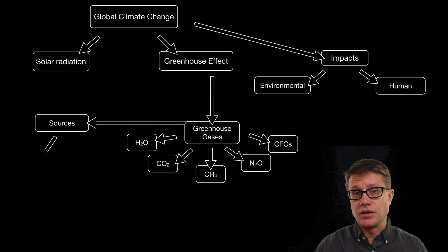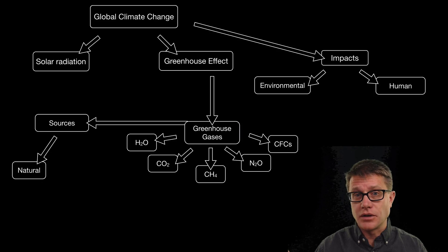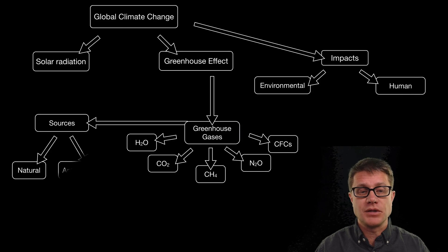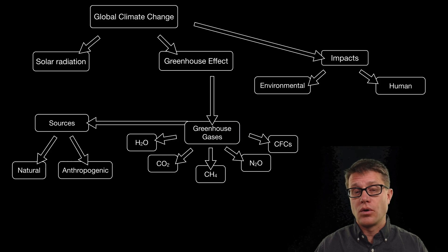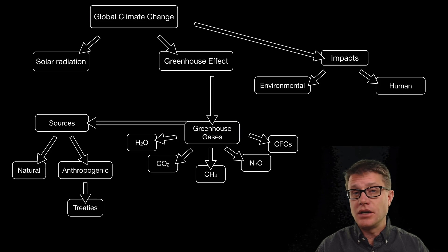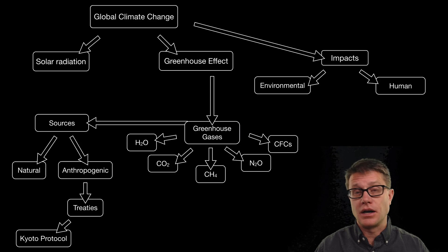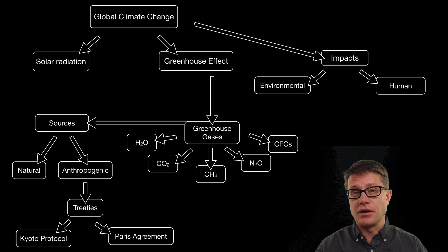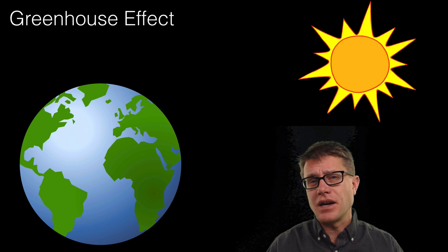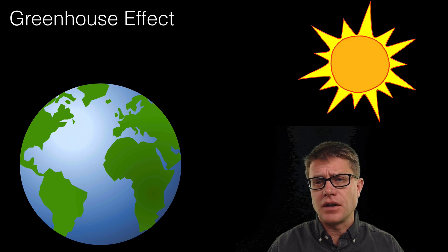Some of these sources are natural — volcanoes, for example, put carbon dioxide and water vapor into the atmosphere. But a lot of these are anthropogenic; in other words, we are producing them and they are warming up the planet. Treaties are being signed to reduce the amount of greenhouse gases in the atmosphere to mediate some of these human impacts. The Kyoto Protocol and Paris Agreement are two that we will talk about.